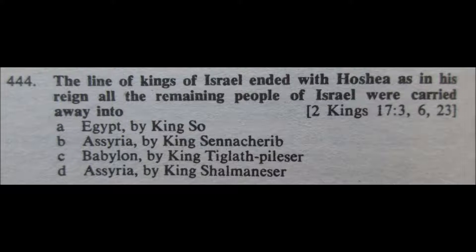Question 444: The line of kings of Israel ended with Hosea, as in his reign all the remaining people of Israel were carried away into: A. Egypt by King So, B. Assyria by King Sennacherib, C. Babylon by King Tiglath-Pileser, or D. Assyria by King Shalmaneser. I'm fairly certain it's Assyria. I'll eliminate A and C. It's between B and D, and I'm going to go with B, Assyria by King Sennacherib.